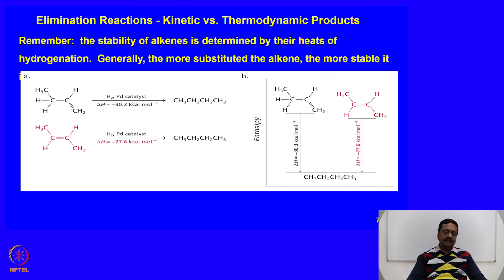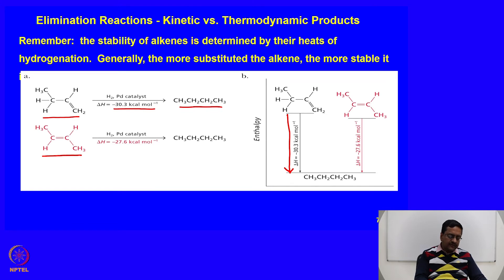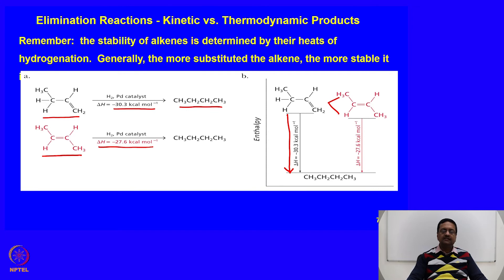Remember, the stability of these alkenes is determined by their heat of hydrogenation. Generally, the more substituted the alkene, the more stable it is. If you hydrogenate the terminal alkene, the energy released is 30.3 kcal/mol. When you hydrogenate the more substituted internal alkene, the delta H is -27 kcal/mol — this is more stable compared to the terminal alkene.